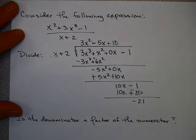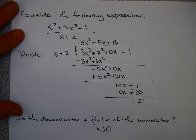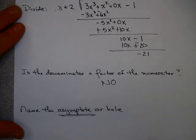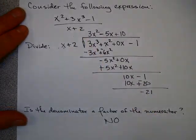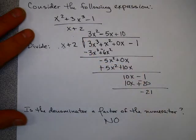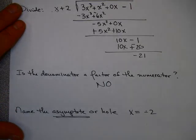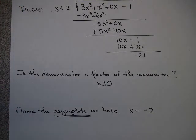So this is not a factor of the numerator. The answer is no. It's not a factor of the numerator. In this case, we have an asymptote. That asymptote occurs when the denominator is 0, and that happens at x equals negative 2. I hope you have found this video useful.